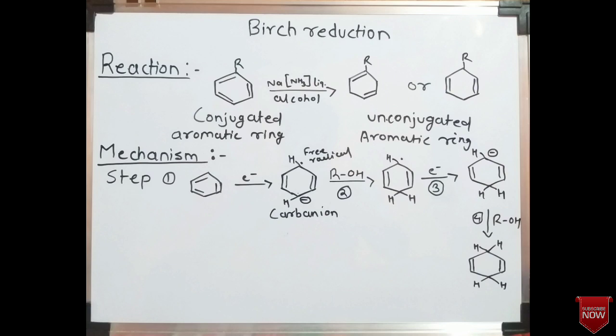The CH2 groups are at the para positions, and there are now only two pi bonds present inside the ring. This was all about the mechanism of the Birch reduction reaction.